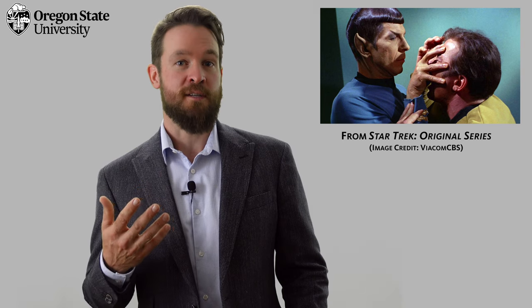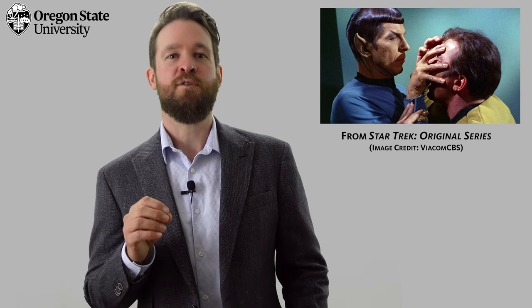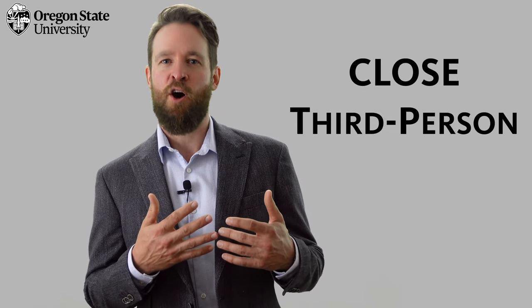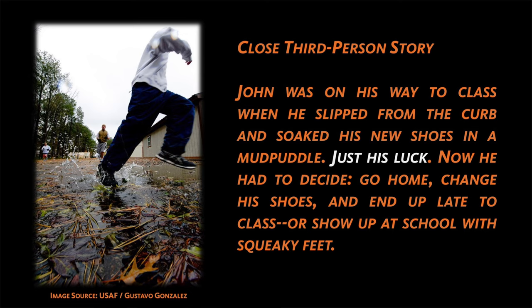Limited third-person points of view vary in their psychological distance. How much can the audience see of the hero's thoughts? Our third-person story about the soaked shoes is called close, meaning that we can see the hero's own private thoughts in the line, 'just his luck.'